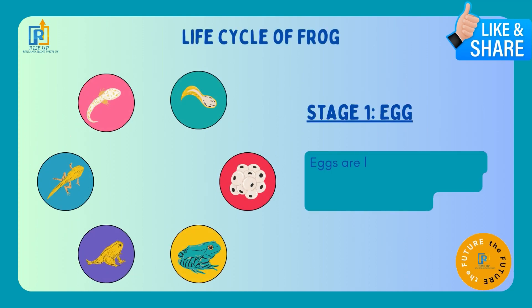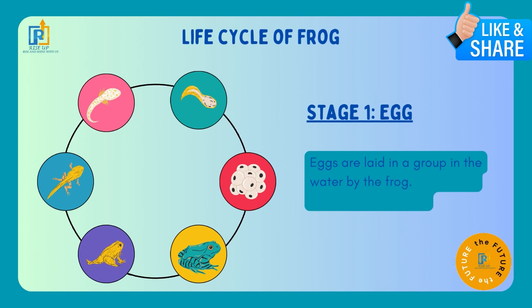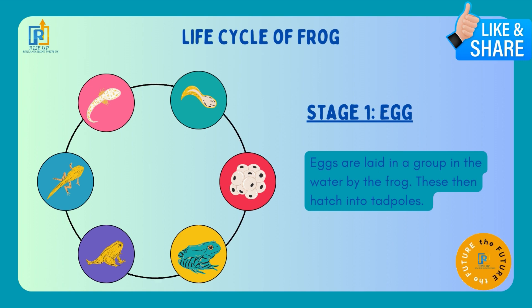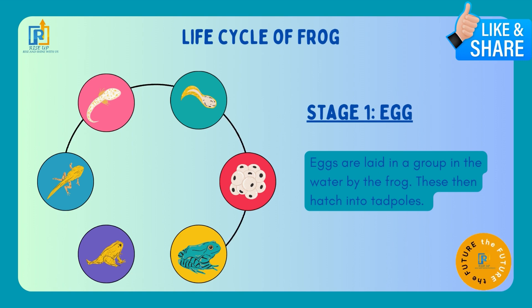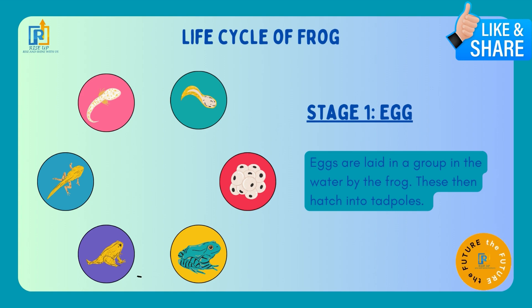Stage 1: Egg. Iski stage 1 hoti hai egg. Eggs are laid in a group in the water by the frog. These then hatch into tadpoles. Frog ek group mein eggs deta hai paani mein, aur phir woh eggs tadpoles mein badal jate hain.